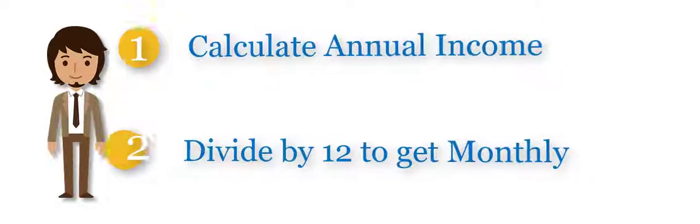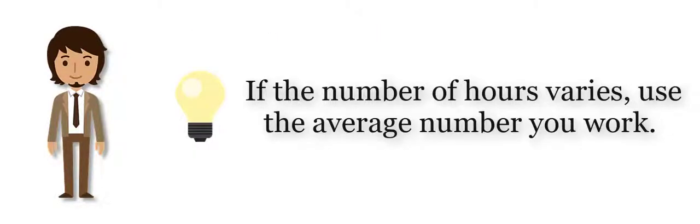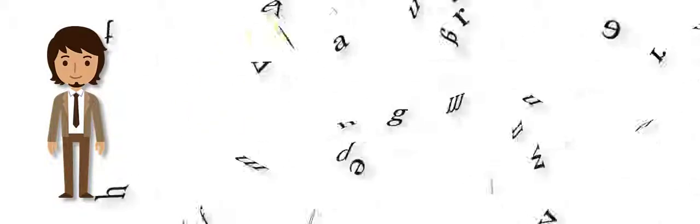Step one is the trickiest. Let's go over it. To calculate your annual income, multiply how much you make per hour by the number of hours you work per week. Quick tip, if you don't work the same hours every week, use your average number of hours.